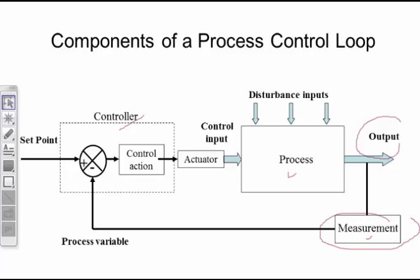There are two of the most important signals used in process control. One is called the process variable, shown as PV. The other one is MV — the manipulated variable. In industrial process control, the process variable PV is measured by an instrument in the field and acts as an input to an automatic controller, which takes action based on the value of it.